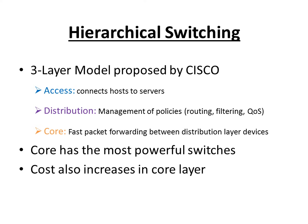The core layer has the most powerful switches in the network. As we move towards the core, availability, reliability, and throughput become increasingly important while functionality tends to be reduced, since most functions are performed in the distribution layer. The cost in the core layer increases since high-speed devices are required.